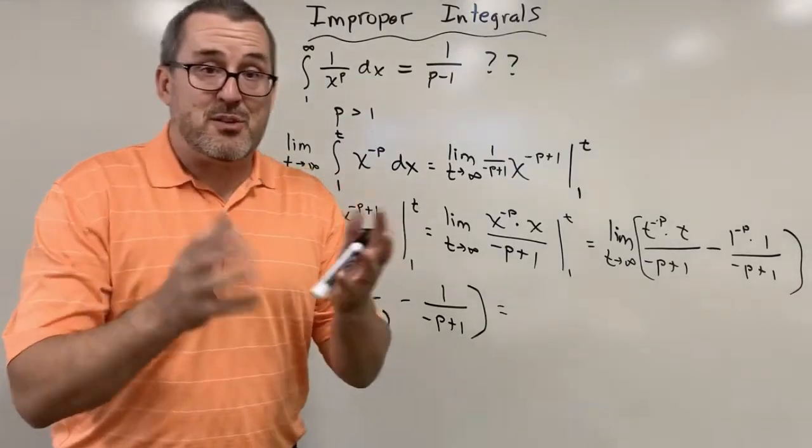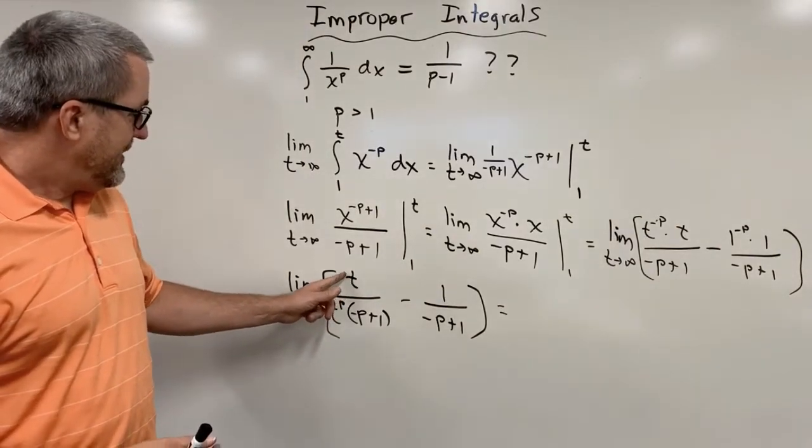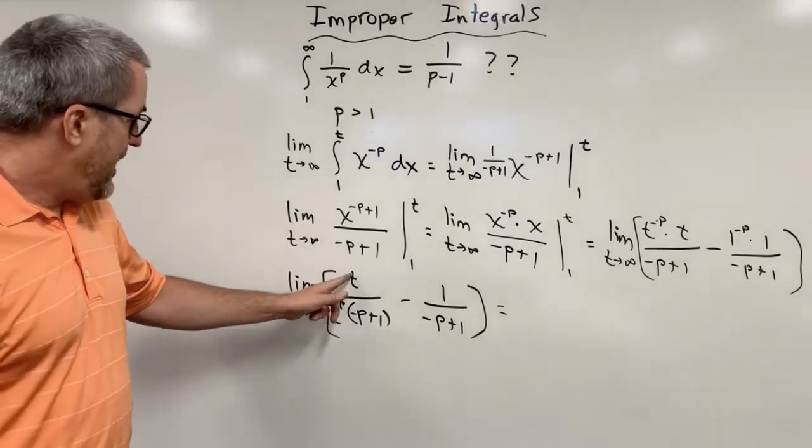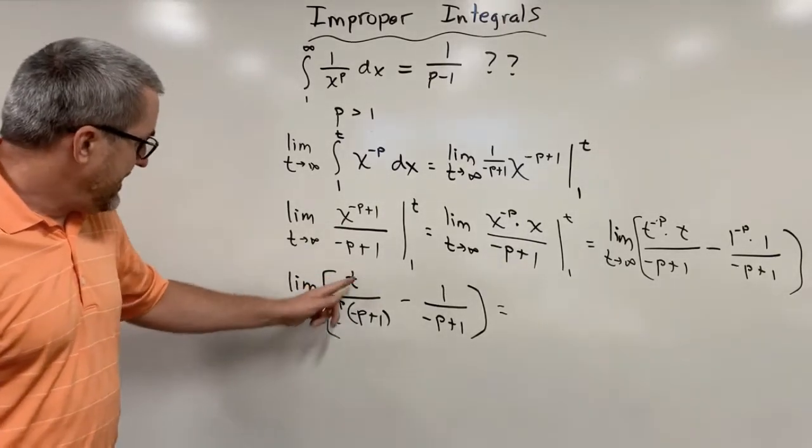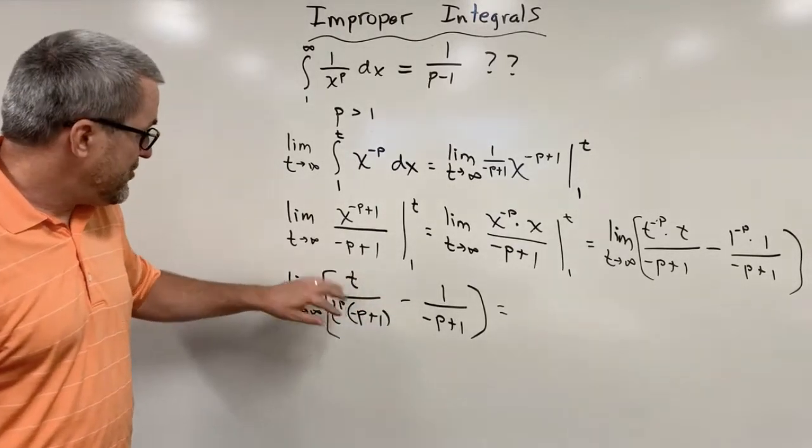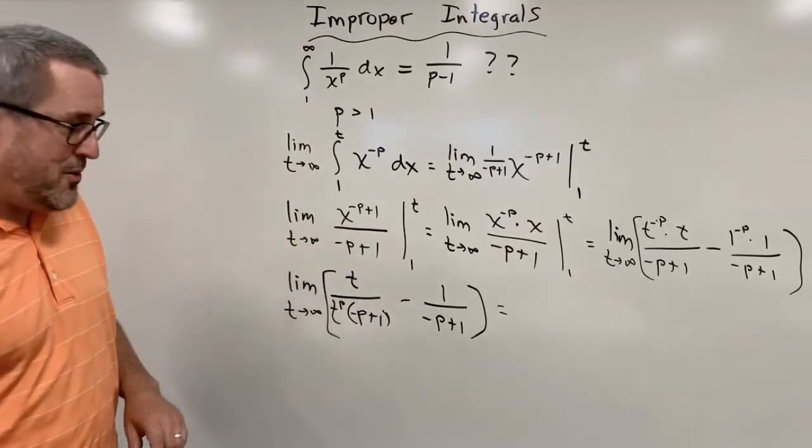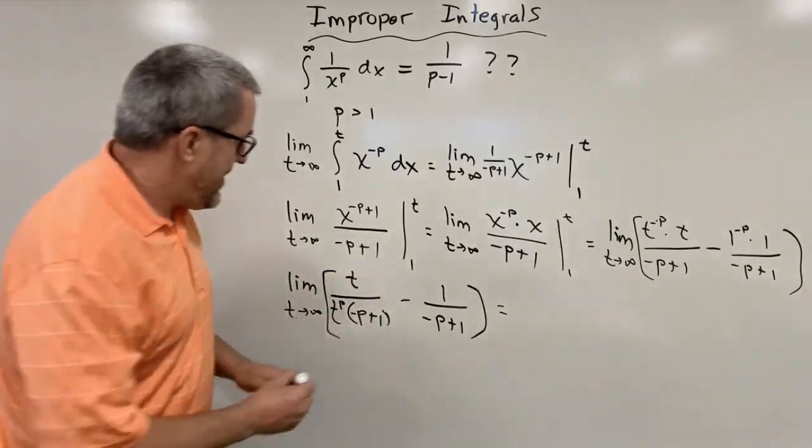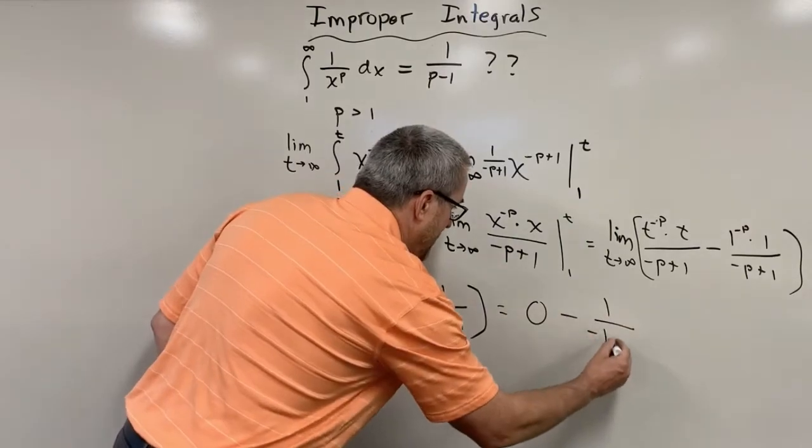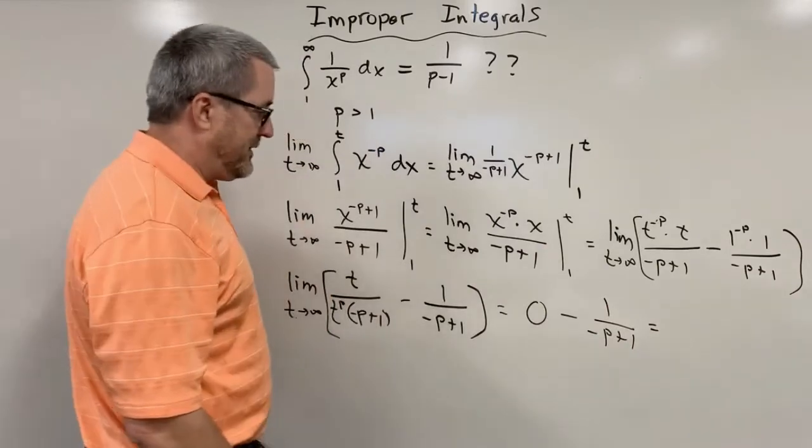So you might have to do some work here to convince yourself that as t gets bigger and bigger, let's say like 10, 10 over 10 to the fourth, a hundred over a hundred to the fourth, a million over a million to the fourth. The denominator is getting bigger, faster than the numerator, making this whole fraction approach zero. So as t goes to infinity, this fraction approaches zero minus one over negative p plus one.